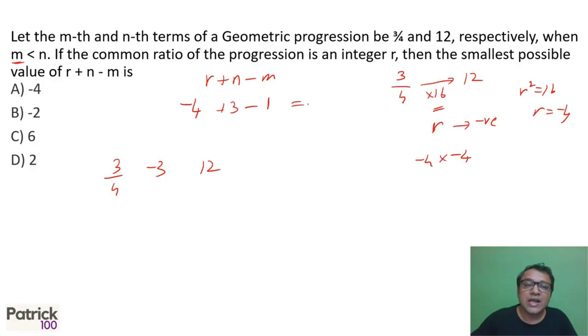So if I solve this, I'll get minus 2. B option. 3 upon 4 to 12 is 16 times. And since I want the smallest number of r and n and minus m, r should be negative. The most negative value it can be is minus 4 because r squared can be 16. Two terms in r can be minus 4. Substitute that out here. So third term is n. From that we get the value is minus 2.